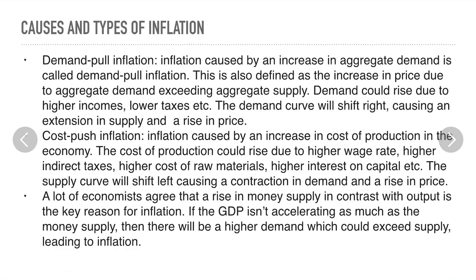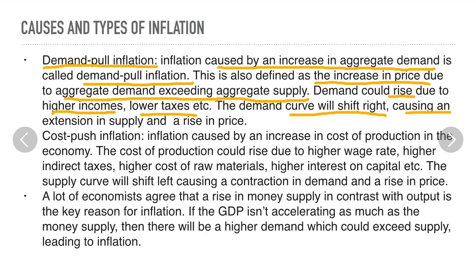Now the causes and types of inflation. There are two types: demand-pull inflation and cost-push inflation. Demand-pull inflation is caused by an increase in aggregate demand. It is defined as the increase in price due to aggregate demand exceeding aggregate supply. The demand could rise due to high incomes, low taxes, and other reasons. The demand curve will shift to the right, causing an extension in supply and a rise in price.